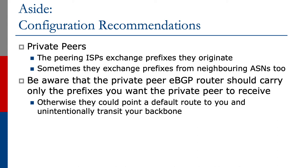Just some configuration recommendations before we move on. A private peer is a network operator that you only want to exchange prefixes you originate with. Sometimes they exchange prefixes from neighboring ASNs as well — they may have BGP customers they wish to share with you. Be aware that the private peer eBGP router should carry only the prefixes you want the private peer to receive. Otherwise, they could point a default route to you and unintentionally or deliberately transit your backbone. Make sure that peering routers do not carry the full BGP table or have a default route on them. Peering routers should only carry the prefixes you want your peers to be able to reach.